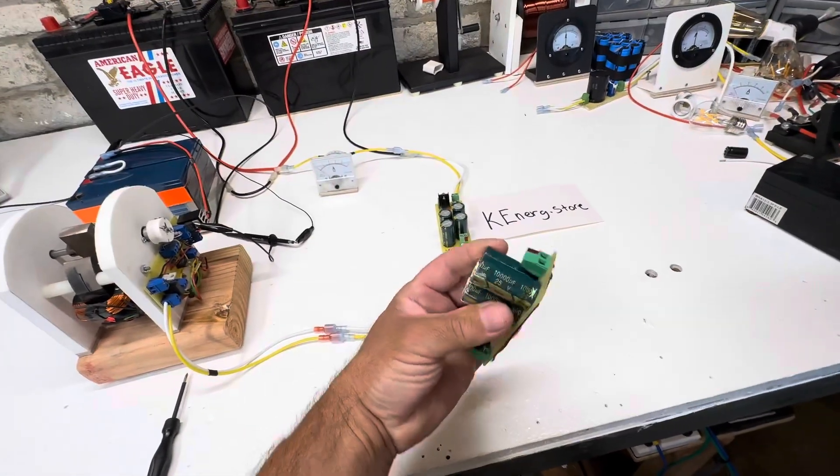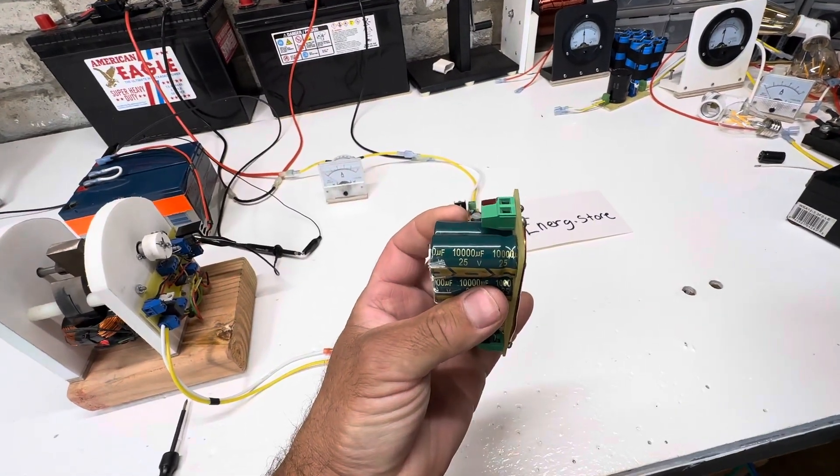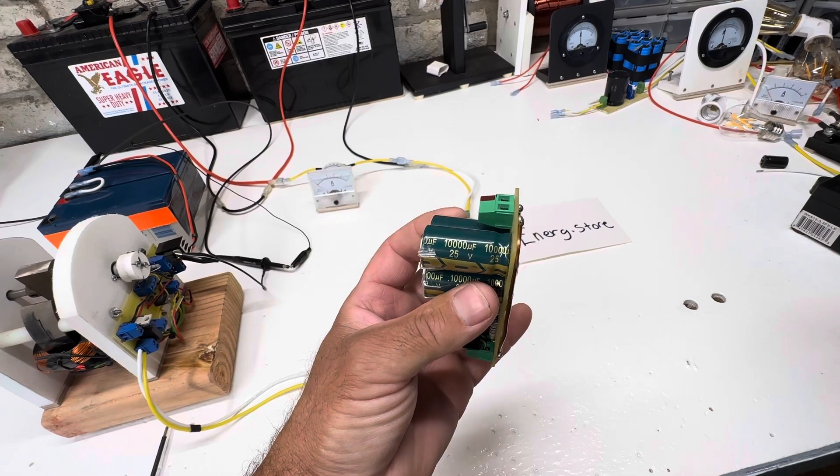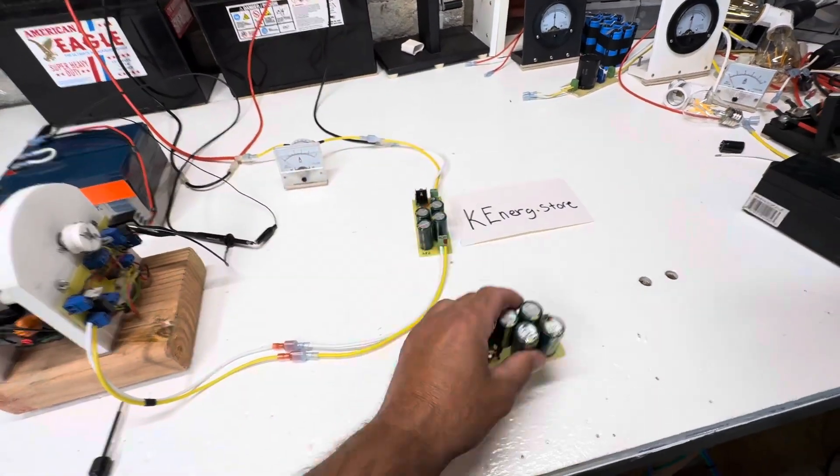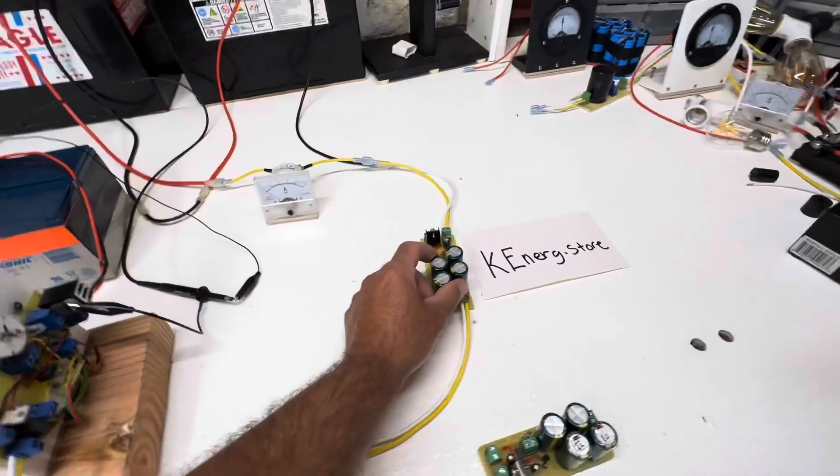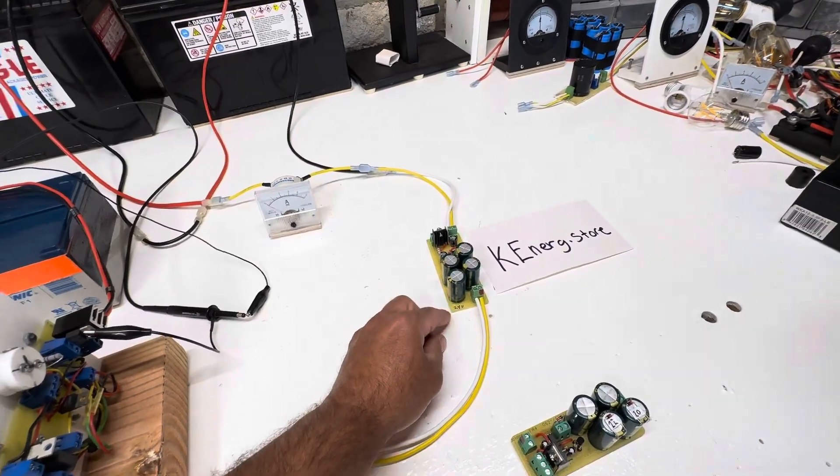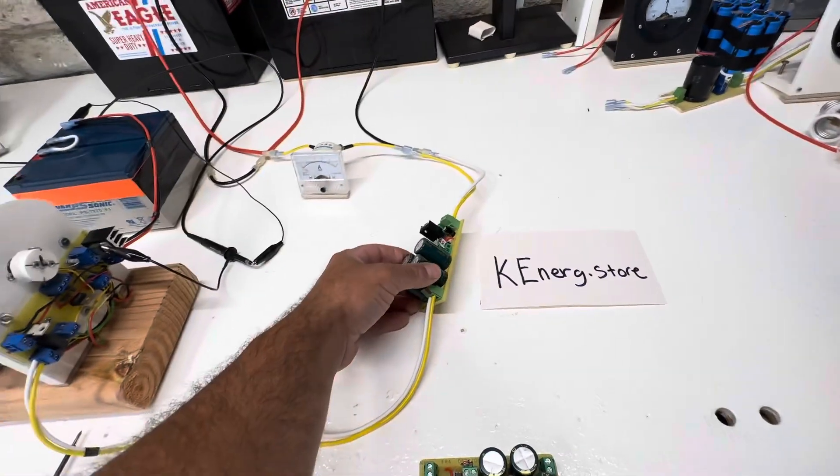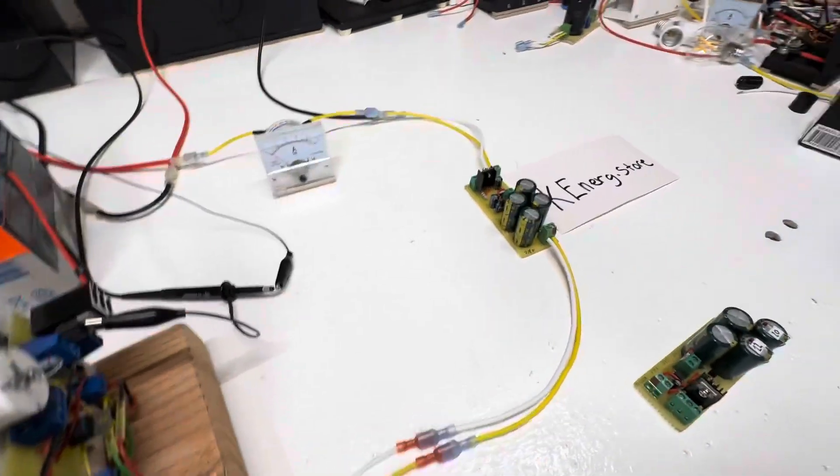This is a 12 volt one, so it's got 25 volt and 10,000 microfarad capacitors with 4 of them. And then this is for our customer. This is a 24 volt one, so this one has 35 volt capacitors at 10,000 microfarads.